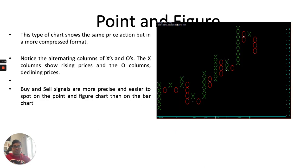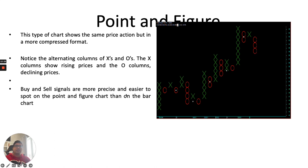There is also one more type of chart, not commonly used, called a point and figure chart. It shows the same price action but in a more compressed form using X's and O's — X means prices are rising, O means prices are declining. Buy and sell signals are more precise and easier to spot on a point and figure chart.